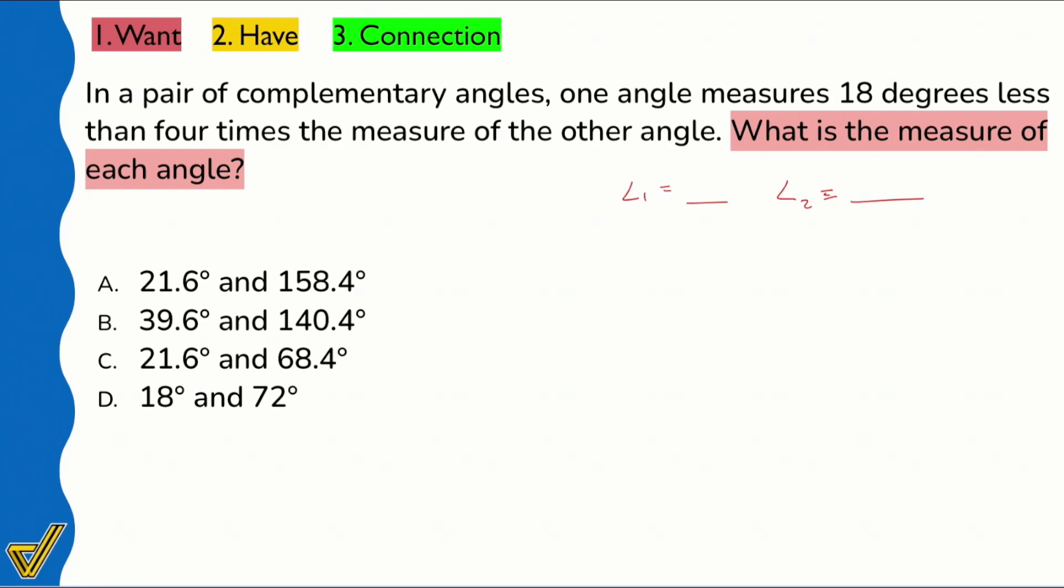So when we're reading here, we see that it says in a pair of complementary angles, one angle measures 18 degrees less than four times the measure of the other angle. Okay, that seems a little a lot, right? That seems like that's a lot, but don't worry.